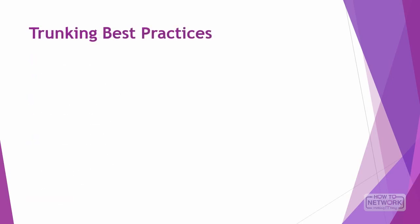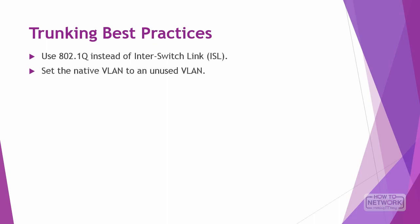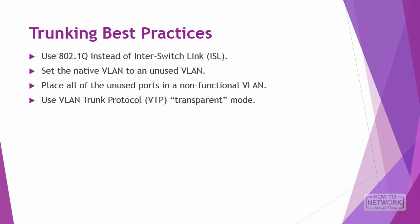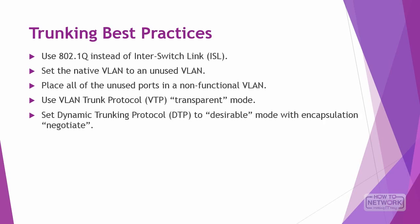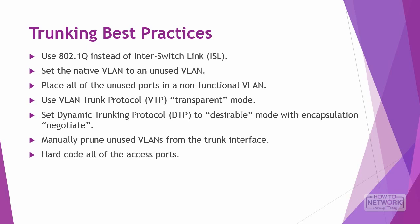For trunking best practices, the most important recommendations include: use 802.1Q instead of ISL because the VLAN tag is external to the Ethernet frame and frame size is not affected; set the native VLAN to an unused VLAN; place all unused ports in a non-functional VLAN to increase security; use VTP in transparent mode; set DTP to desirable with encapsulation negotiate when configuring switch-to-switch links carrying multiple VLANs; manually prune unused VLANs from the trunk interface to avoid broadcast propagation; hard code all access ports as a security countermeasure to VLAN hopping.